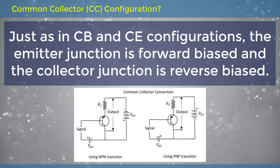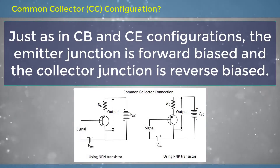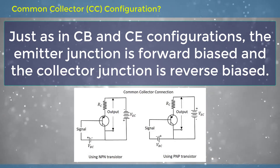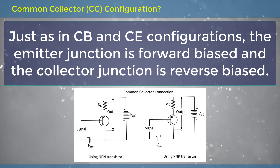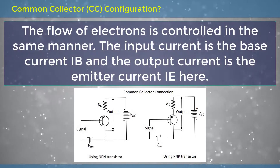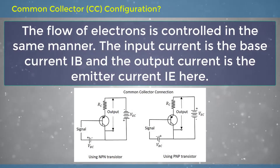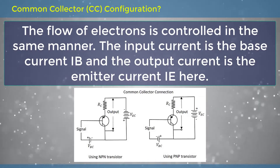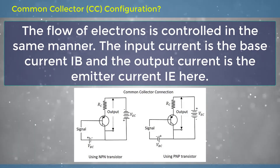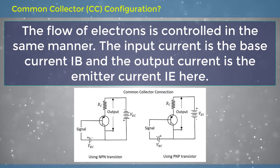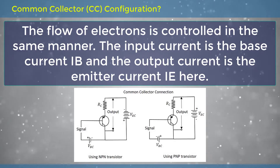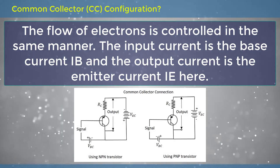Just as in CB and CE configurations, the emitter junction is forward biased and the collector junction is reverse biased. The flow of electrons is controlled in the same manner. The input current is the base current IB and the output current is the emitter current IE.